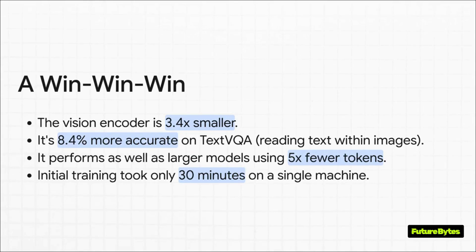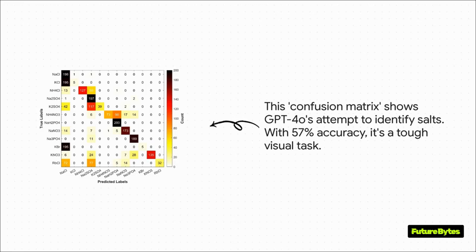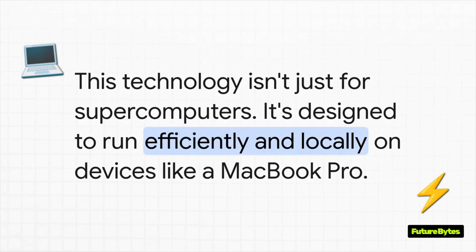And it's not just about that one headline number. The vision part of the AI is smaller yet actually more accurate on tough jobs like reading text inside of an image, and it can be trained in just half an hour — that kind of efficiency makes developing this kind of advanced AI so much more accessible to everyone. Going back to our salt crystals: this chart, called a confusion matrix, shows just how often a really powerful AI like GPT-4o got mixed up trying to identify them. Getting these visual challenges right consistently is a huge hurdle. But making it accurate and fast enough to run on personal devices — on your laptop — that is the real next frontier. And on just a regular MacBook Pro, FastVLM is nearly seven times faster than other popular models.